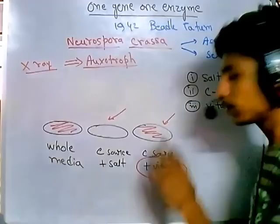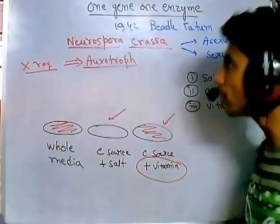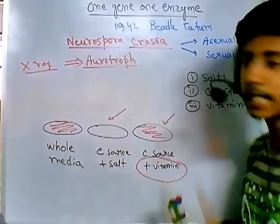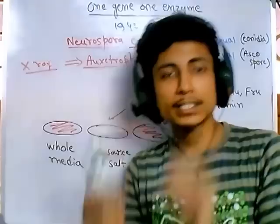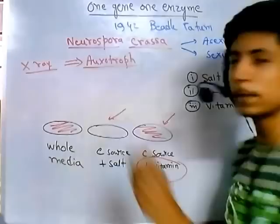Normally, wild-type Neurospora crassa can grow without any supplemented vitamin because it synthesizes its own. But once irradiated with X-rays, a mutation is triggered, and the gene responsible for biosynthesis of thiamine is damaged or mutated. As a result, that mutant Neurospora crassa is not able to produce thiamine on its own and cannot grow.